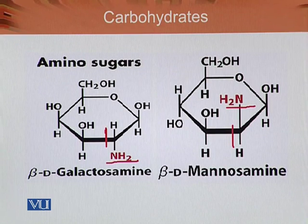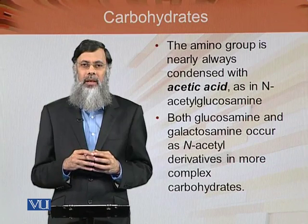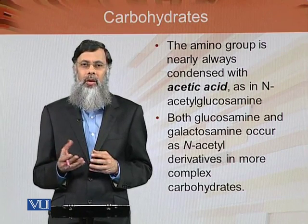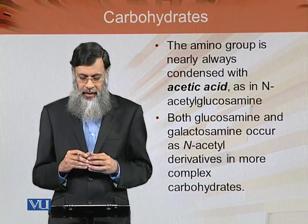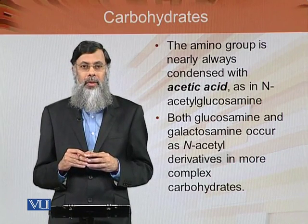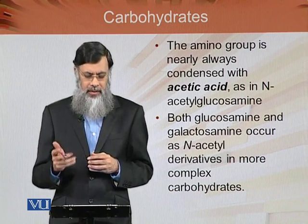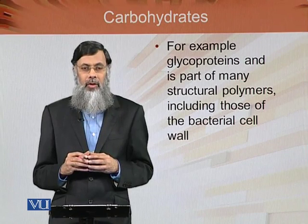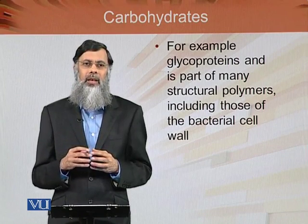The amino groups attached on carbon atom number 2, forming glucosamine or manosamine, are almost always condensed with acetic acid as N-acetyl glucosamine. Both glucosamine and galactosamine occur as N-acetyl derivatives in more complex carbohydrates, for example glycoproteins and in many structural polymers which include the bacterial cell wall of different microorganisms.